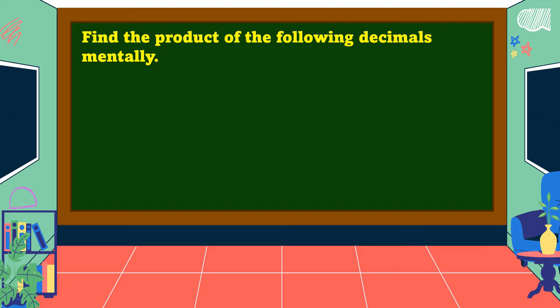Find the product of the following decimals mentally: six and sixty-seven-hundredths times ten. In multiplying decimals by ten, move the decimal point one decimal place going to the right. The answer is equal to sixty-six and seven-tenths.